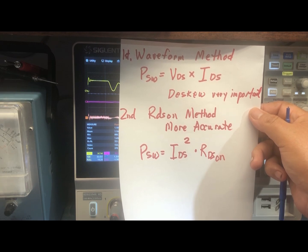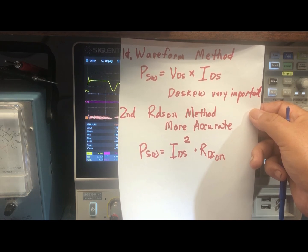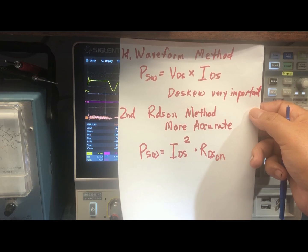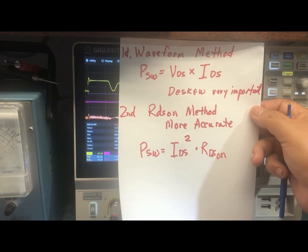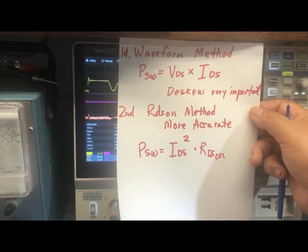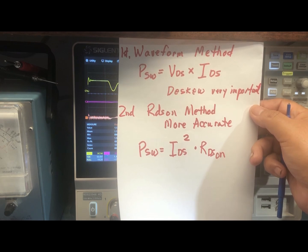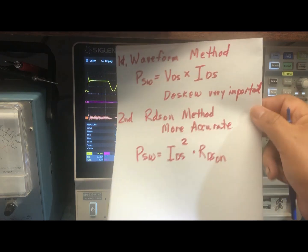The second method is the RDS-on method, which is probably more accurate. If you know the RDS-on of your MOSFET and you're properly driving it with VGS, you should have a fairly accurate representation of the resistance. If you multiply RDS-on times the current squared, you should get the same power loss measurement.